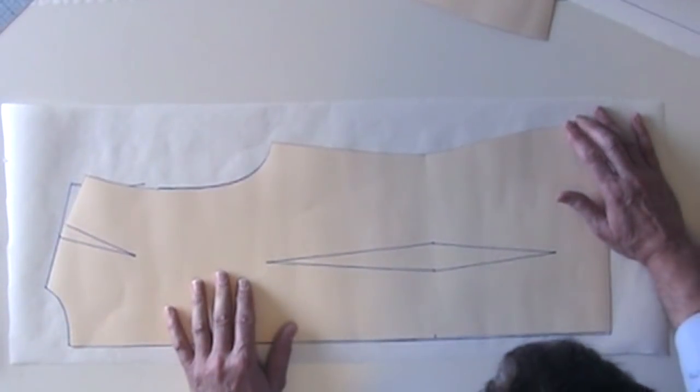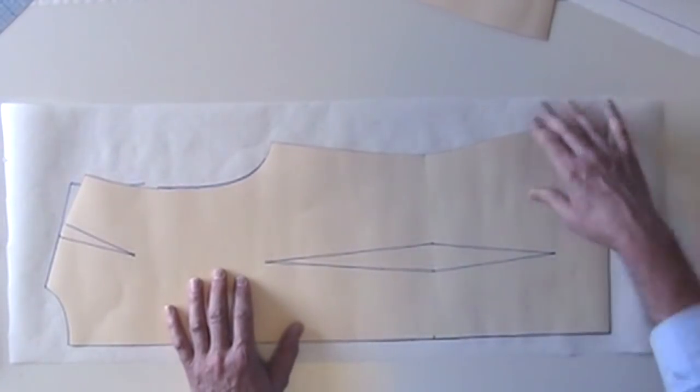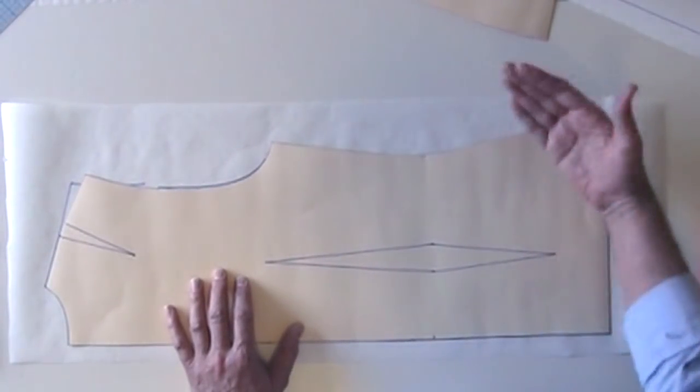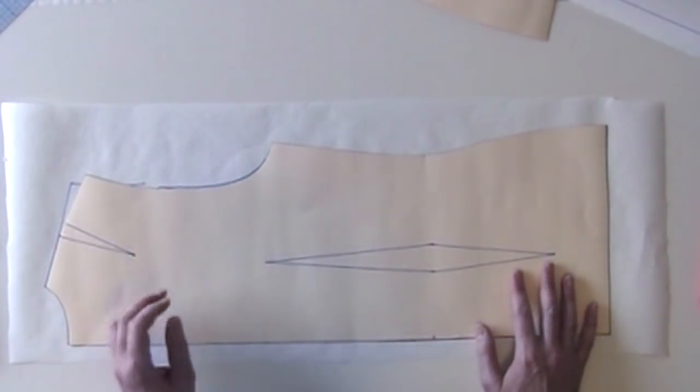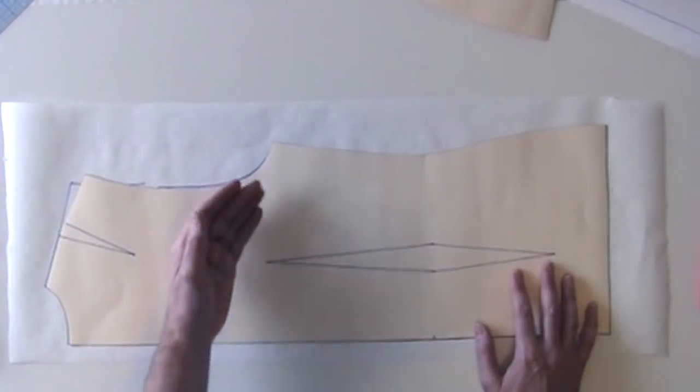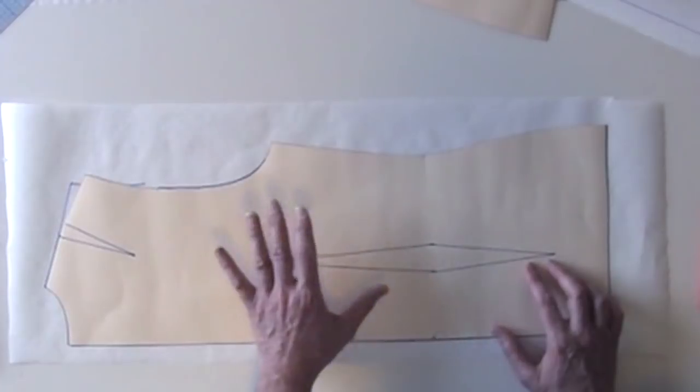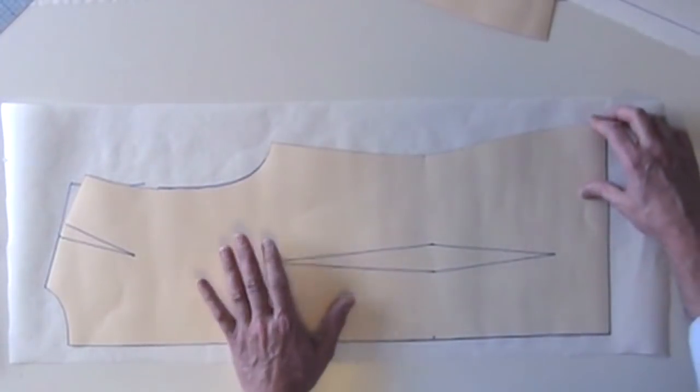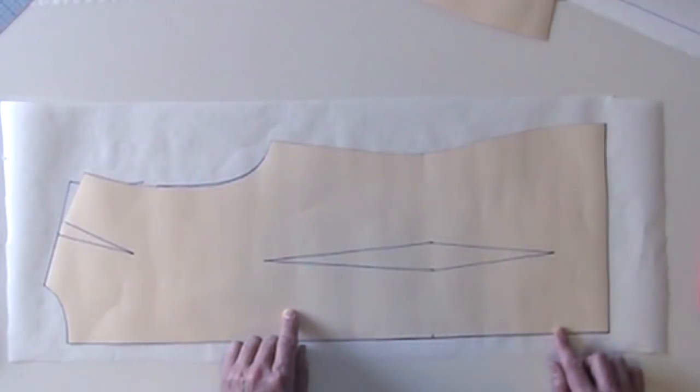If you remember when we drafted the bodice sloper, I shifted the side seam about a quarter inch to the back. And that's typical for a fitted woven woman's garment. The side seams are slightly to the back to allow more room across the front. Well, in this case, because we're eliminating darts and fitting, I want to make the across chest and sweep about the same front and back.